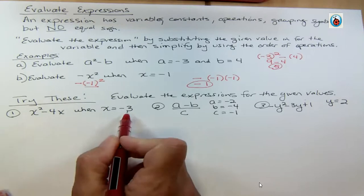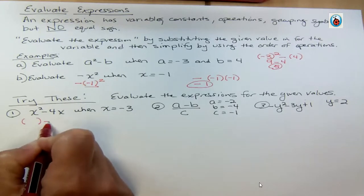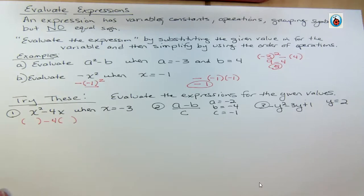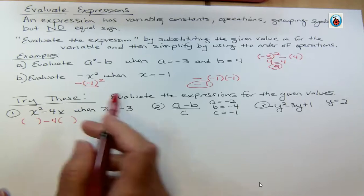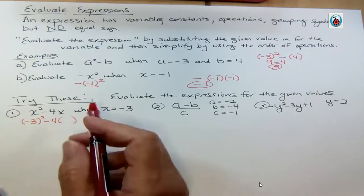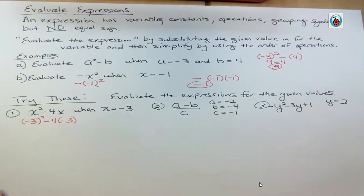Alright, every time I replace something, I'm gonna put parentheses around it so you can see what's happening here. Where I used to have x, I'm gonna replace it with the value of x that we were given. So we have negative 3. There's a second power there. And then over here for the other x, I have negative 3 again.